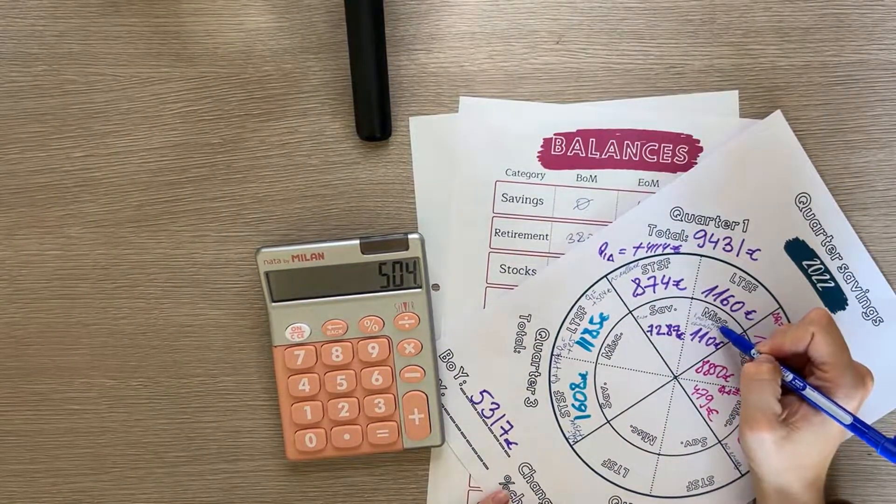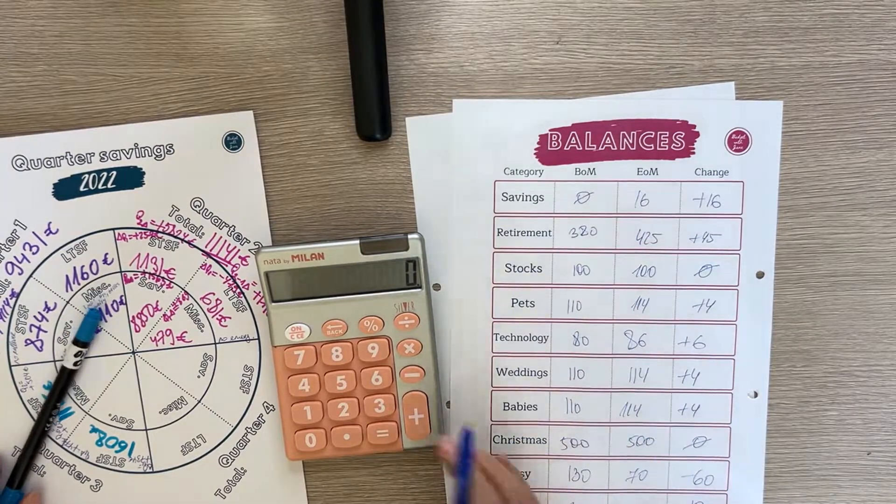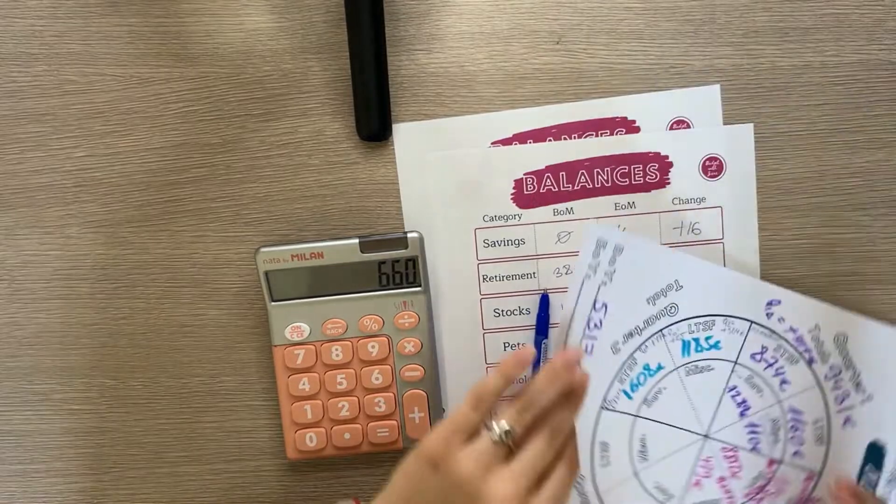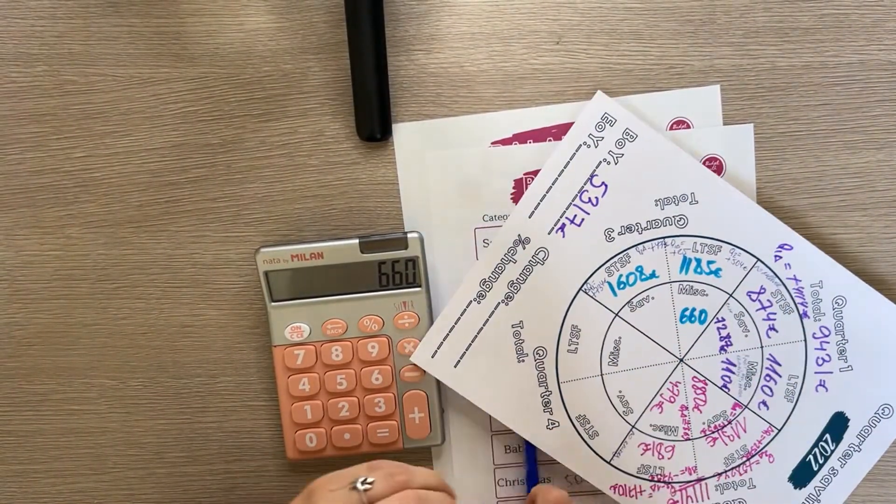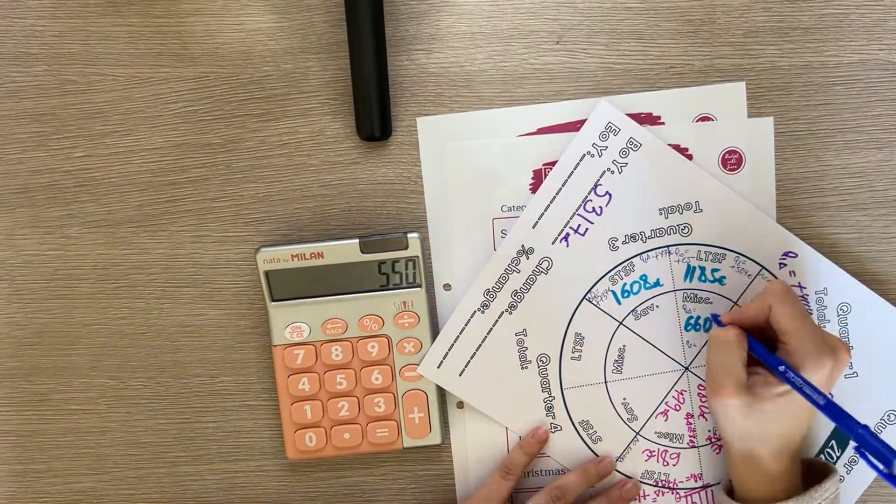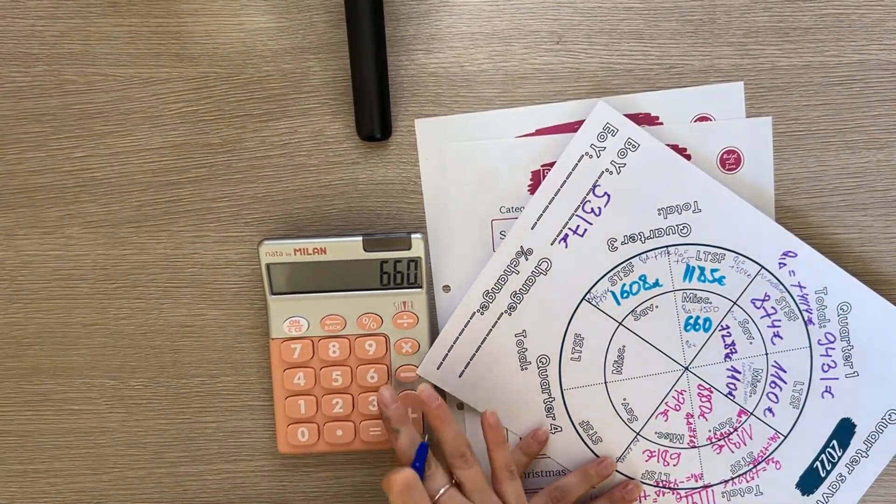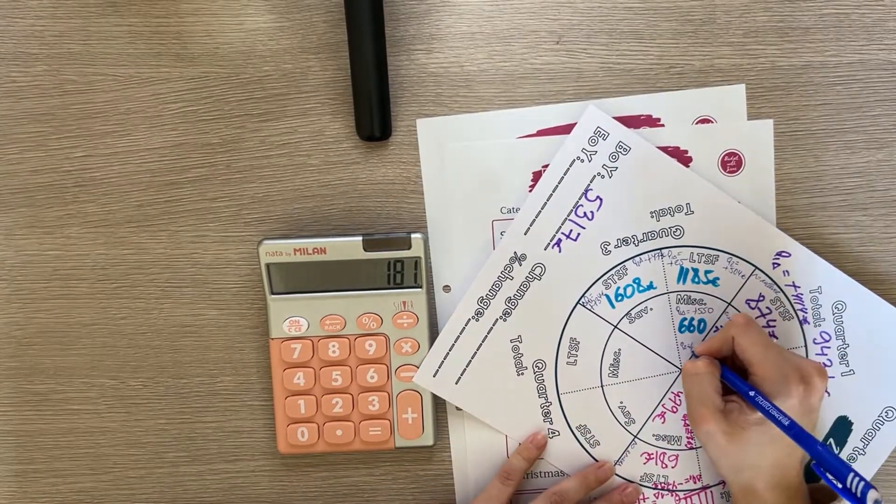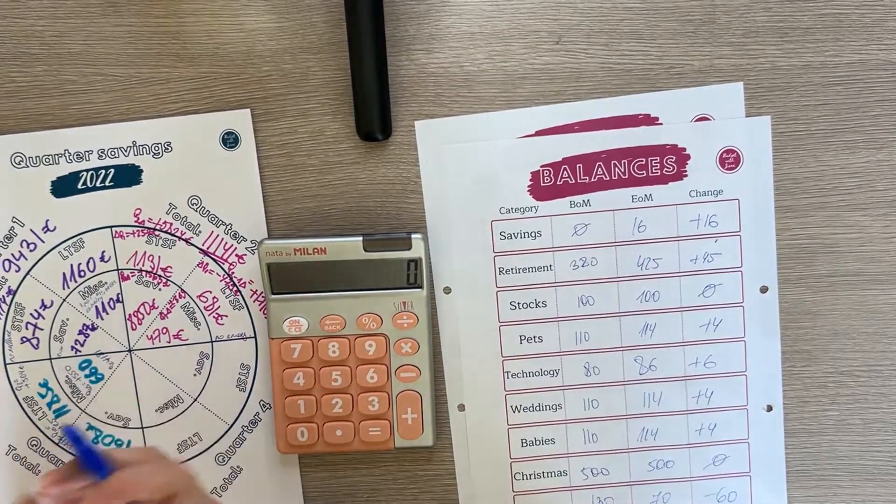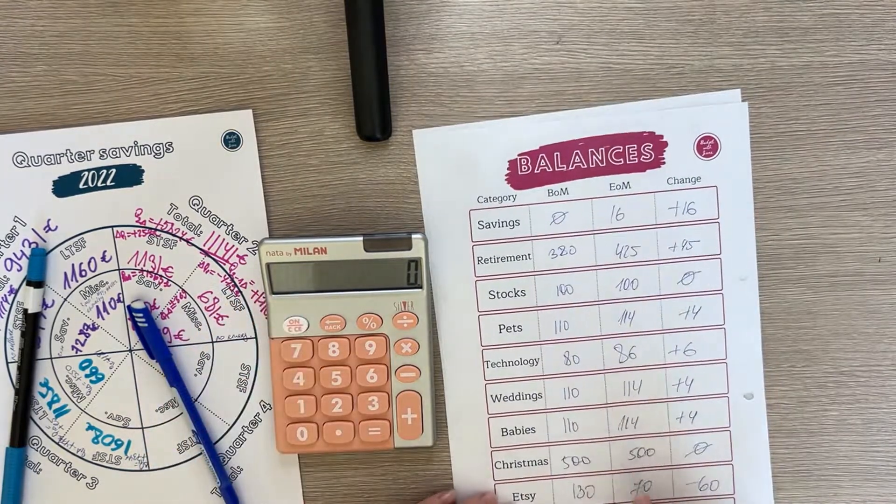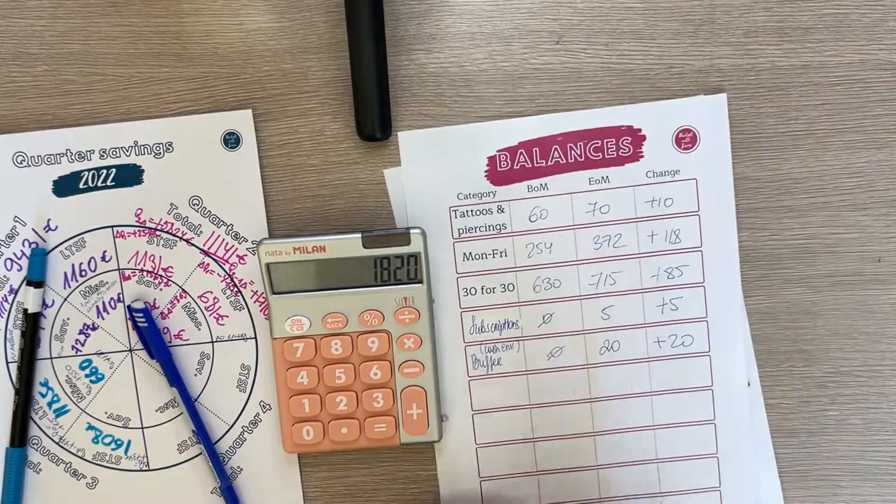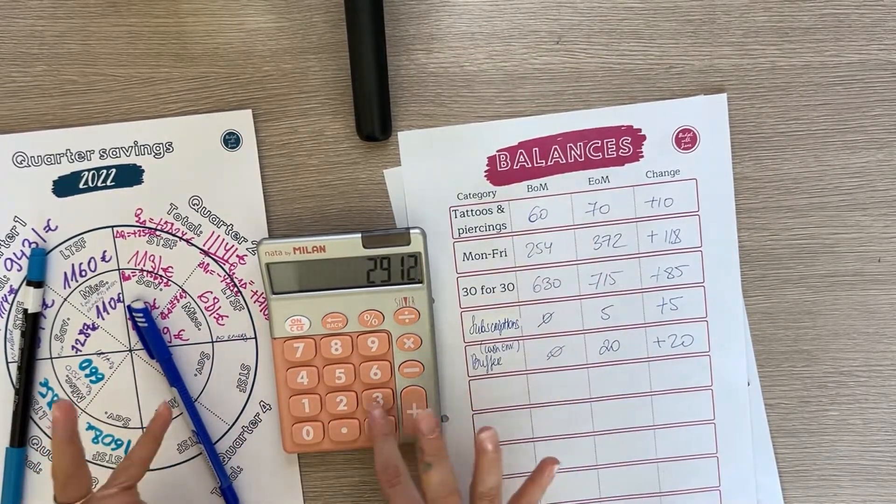Miscellaneous, here I have written Christmas, Etsy, tattoos and charity so that's what we're gonna count as miscellaneous. That's $660 in the category miscellaneous. In quarter one we had $110 which is a positive $550 difference and in quarter two we had $479 which is a positive $181 difference. Then savings is everything that was rest, all the other categories I had.